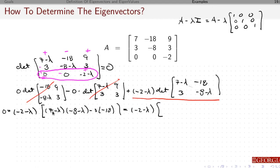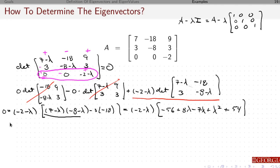Let's expand that 2 by 2 determinant out. I foil (7 minus lambda)(minus 8 minus lambda): 7 times minus 8 is minus 56, minus lambda times minus 8 is plus 8 lambda, 7 times minus lambda is minus 7 lambda, and minus lambda times minus lambda is plus lambda squared. Then minus 3 times minus 18 is minus 54. So I have lambda squared plus lambda minus 56 plus 54, which gives lambda squared plus lambda minus 2.